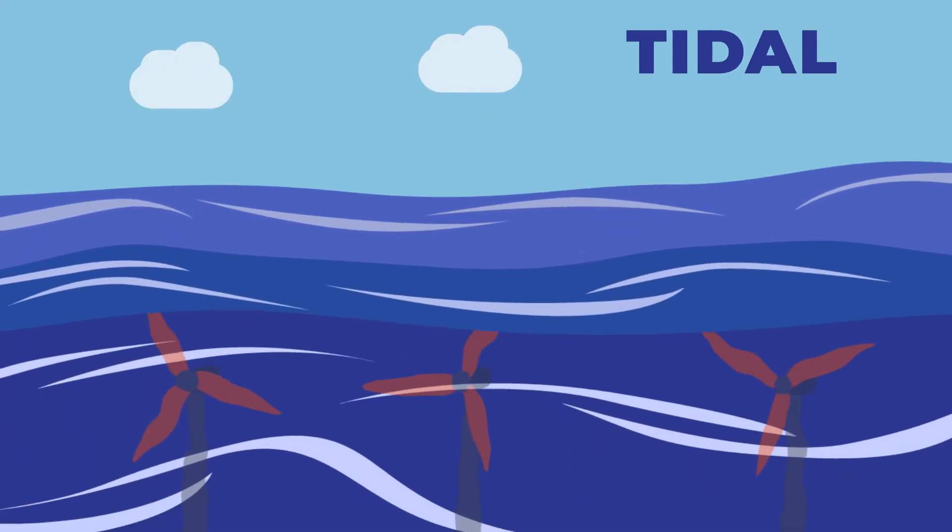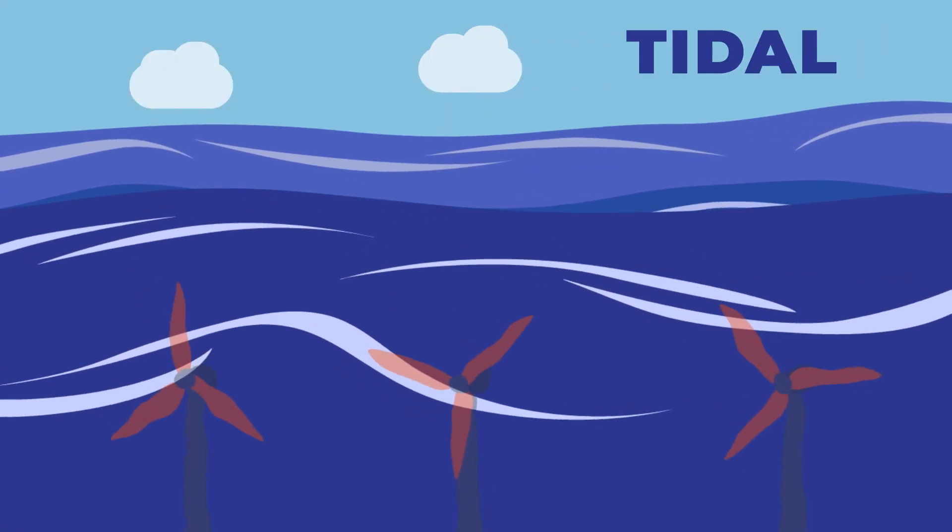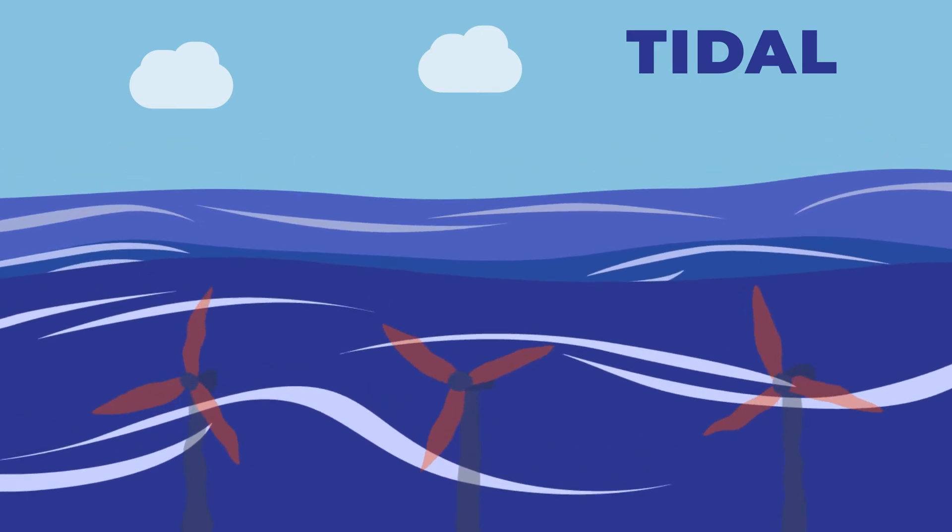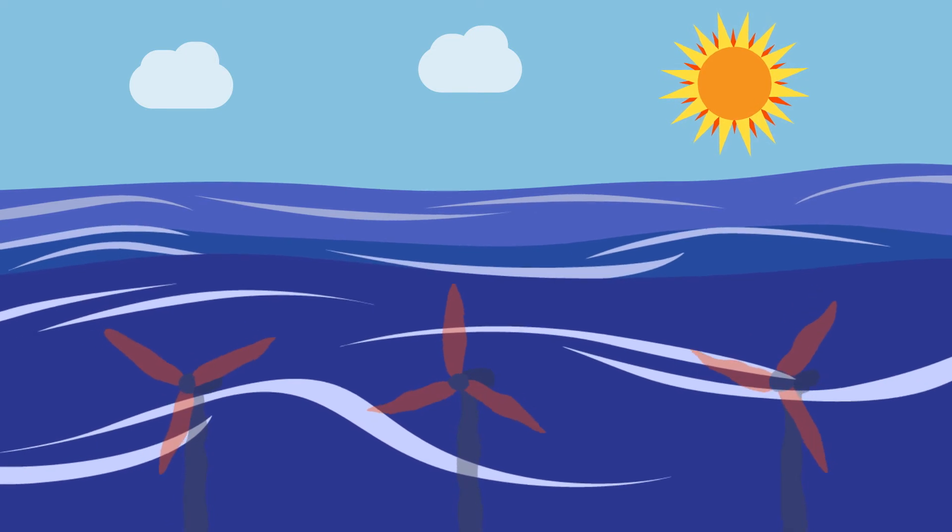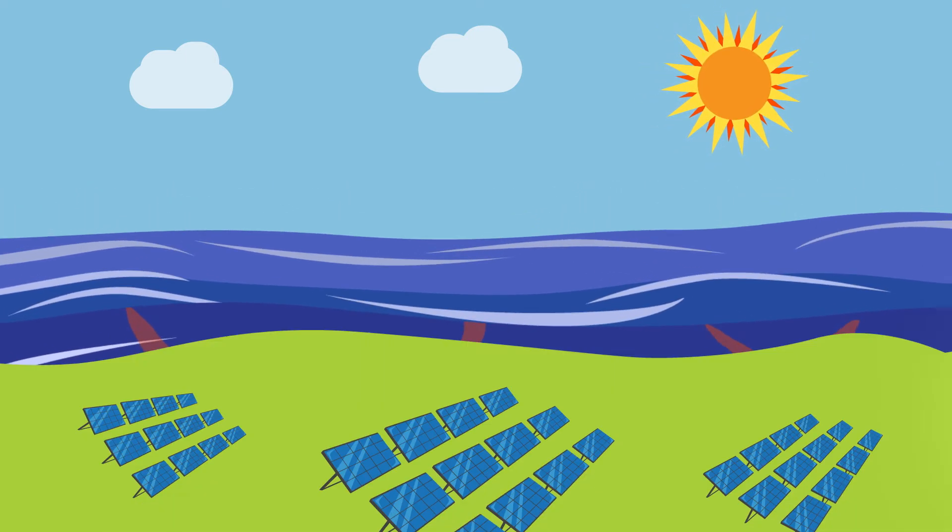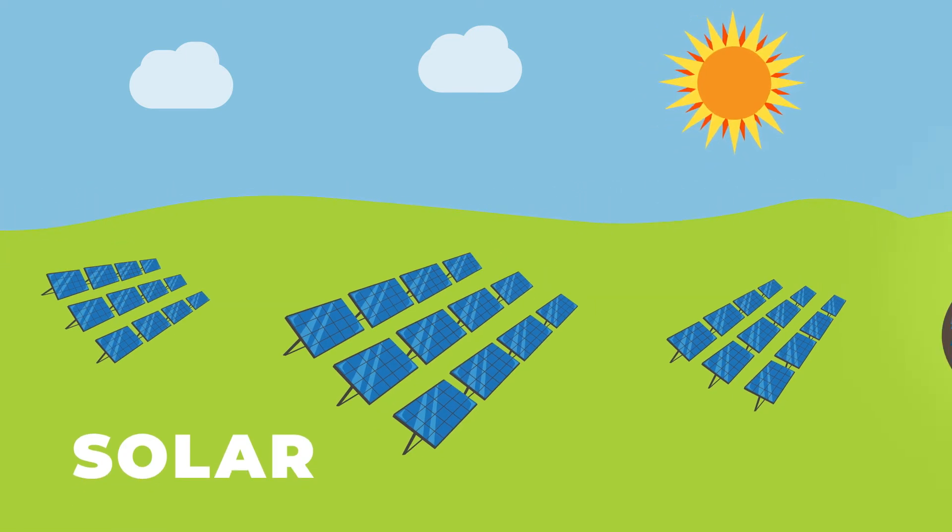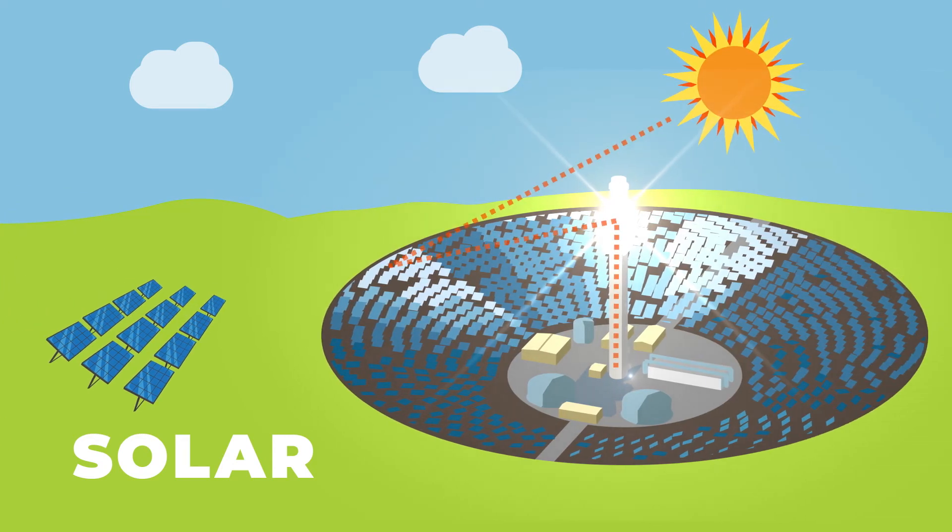Tidal power uses the rising and falling of ocean tides to generate electricity. And what about our original source of renewable energy? The sun. Solar panels and concentrated solar power systems capture the sun's energy so we can store it for later use.